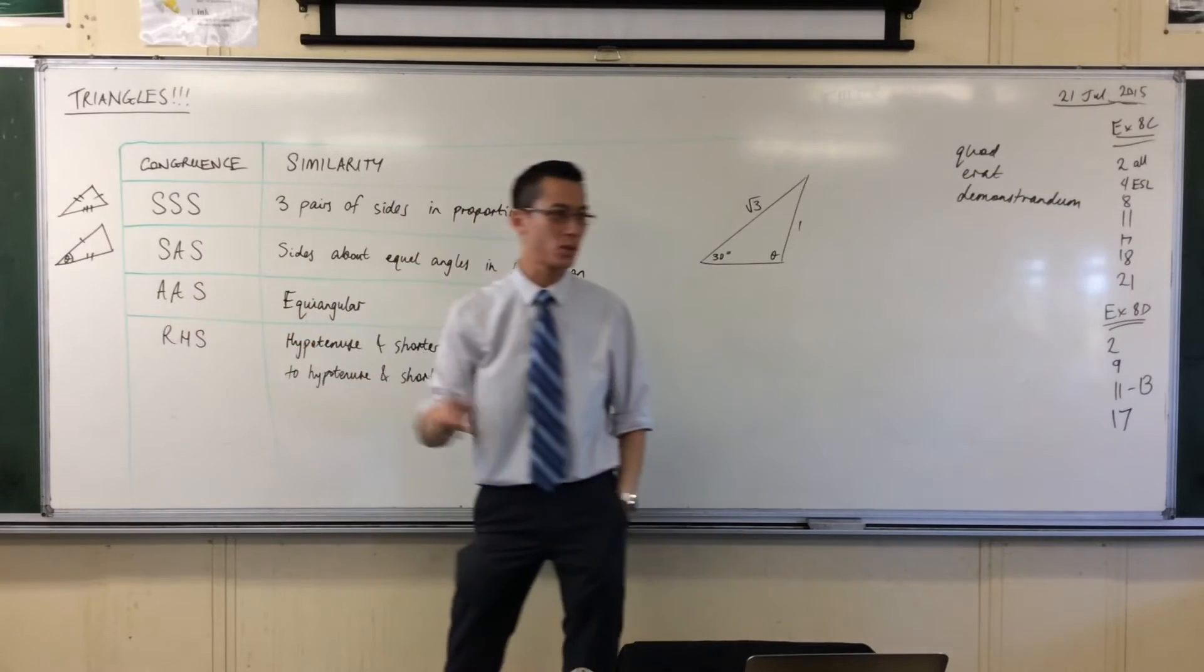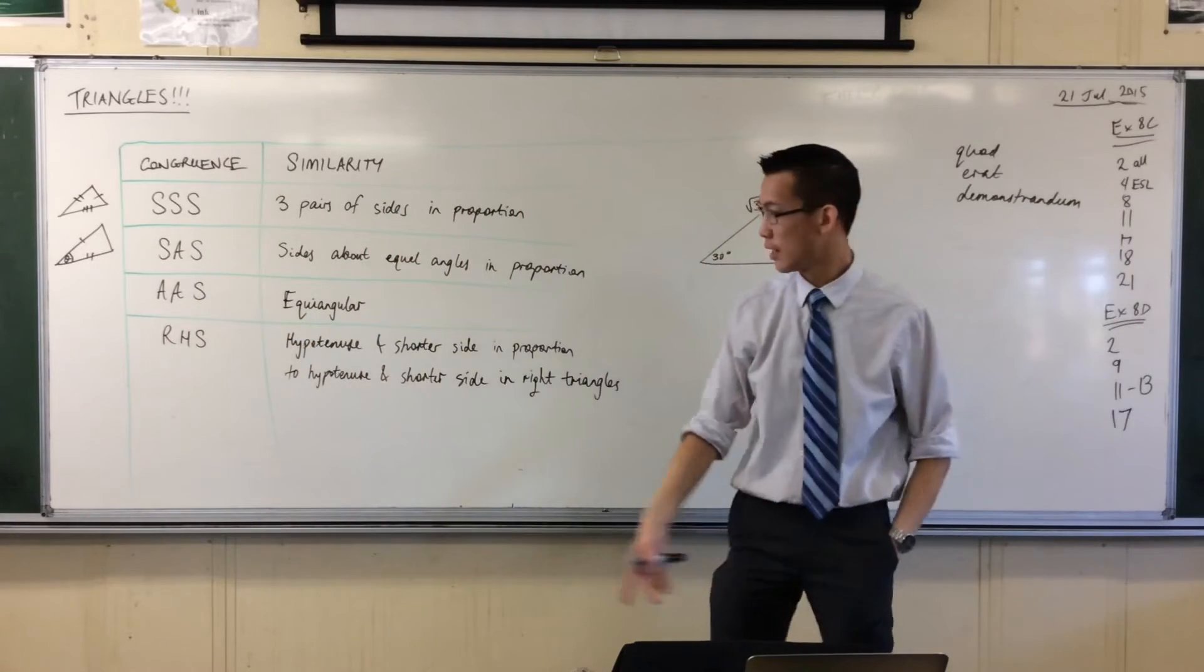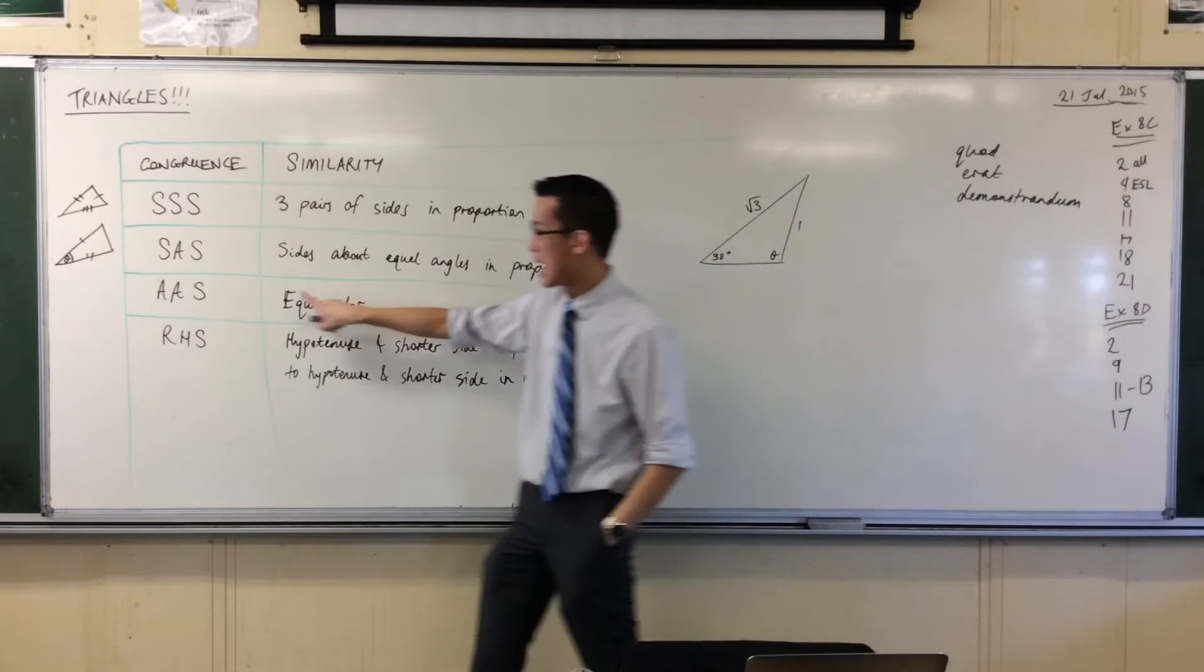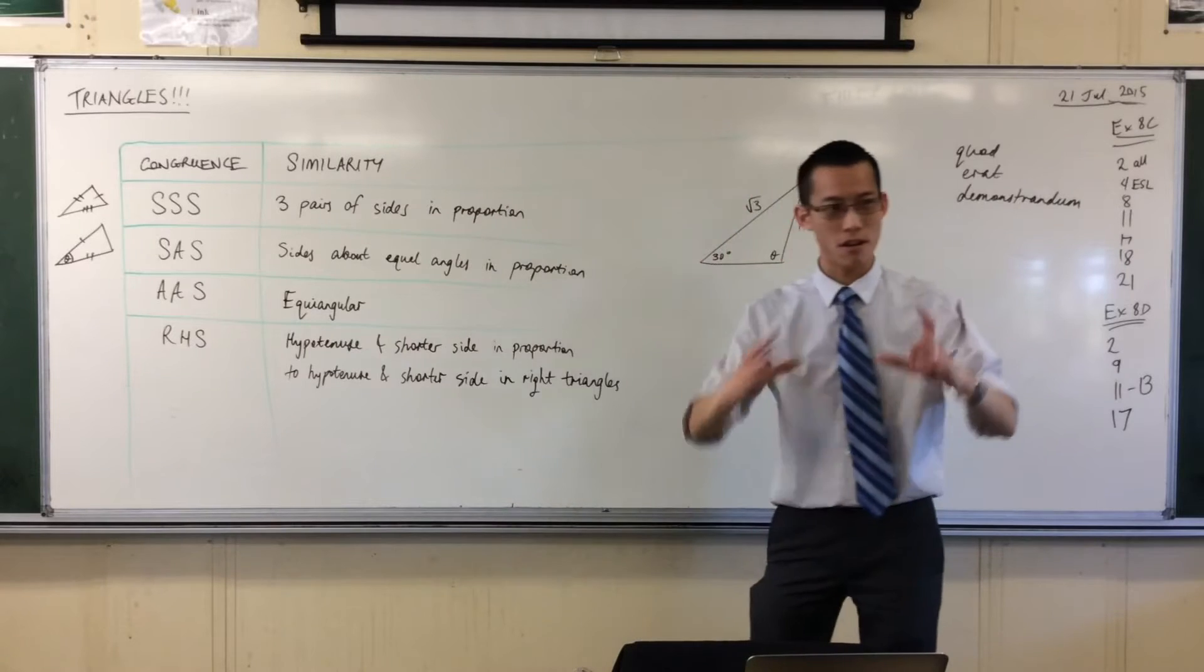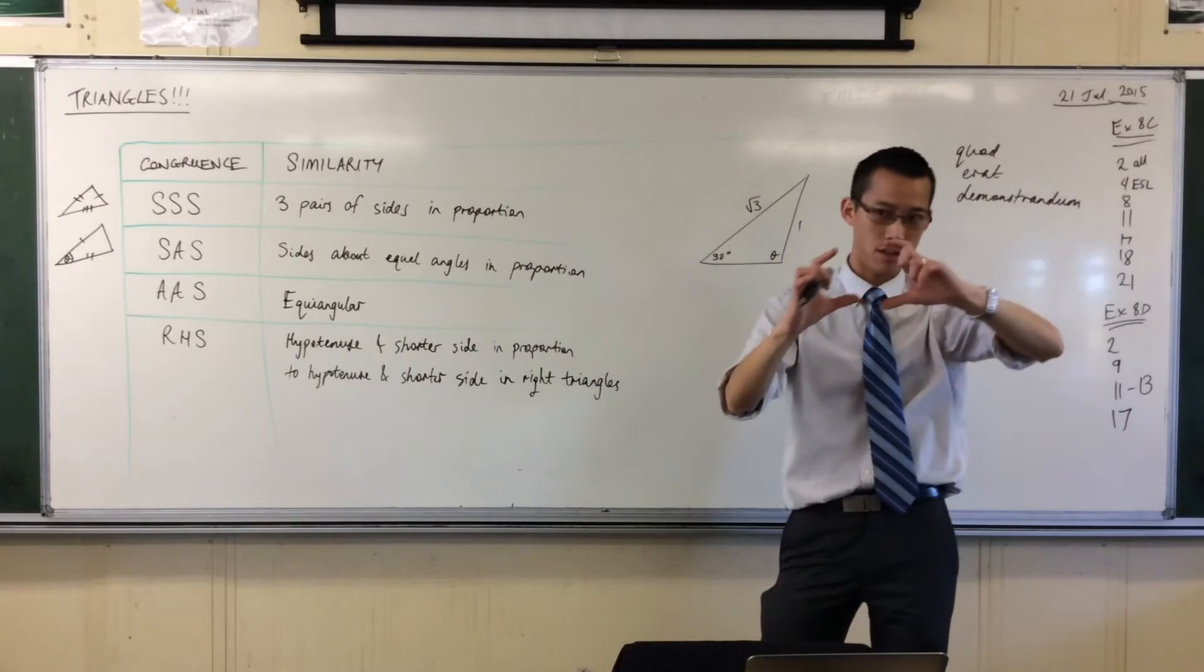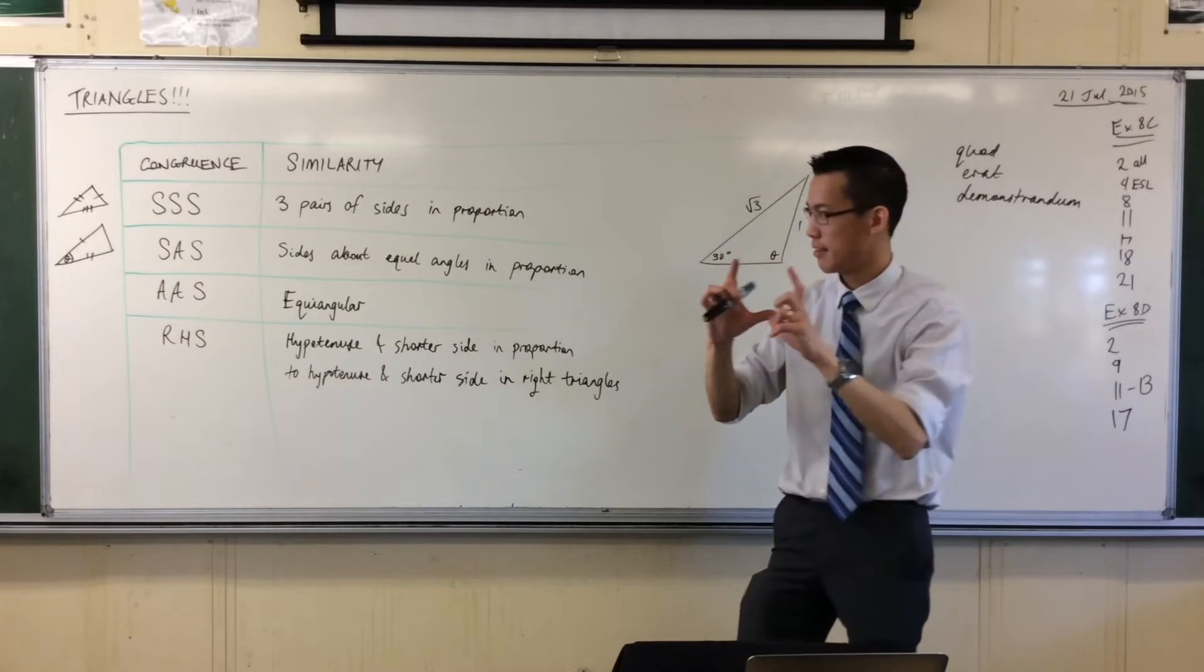You can have two angles, which means you really have all the angles. That's equiangular. Once you have a side, then you've locked in the size of the triangle. So no longer are they similar to each other, but if one of the sides is the same length, then they're exactly the same size.